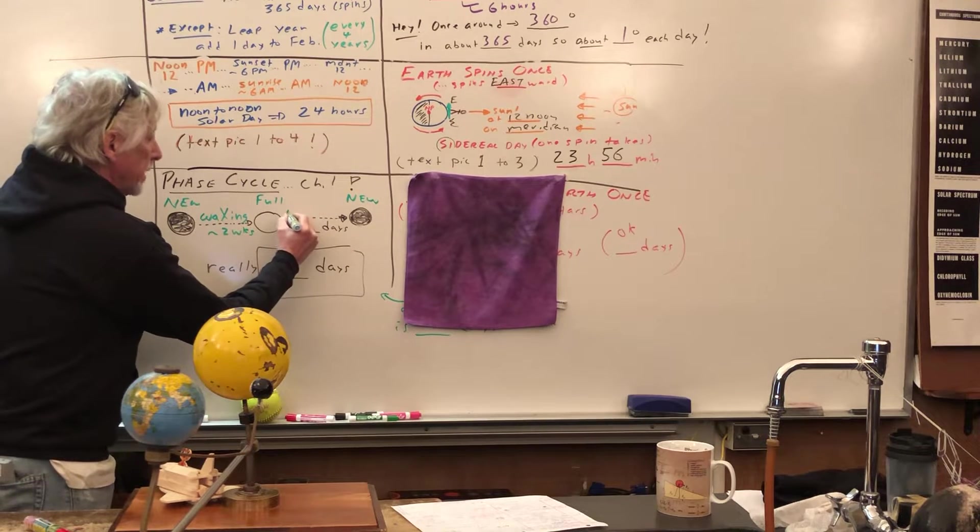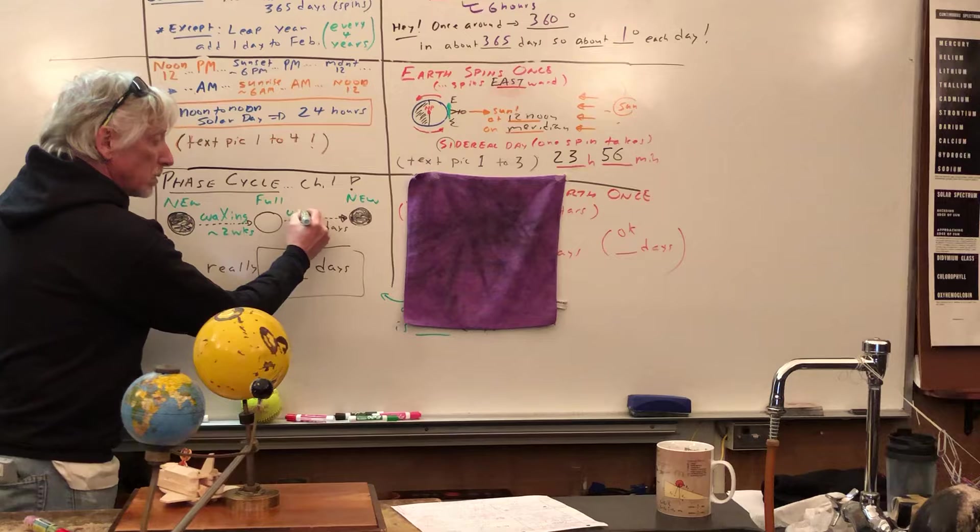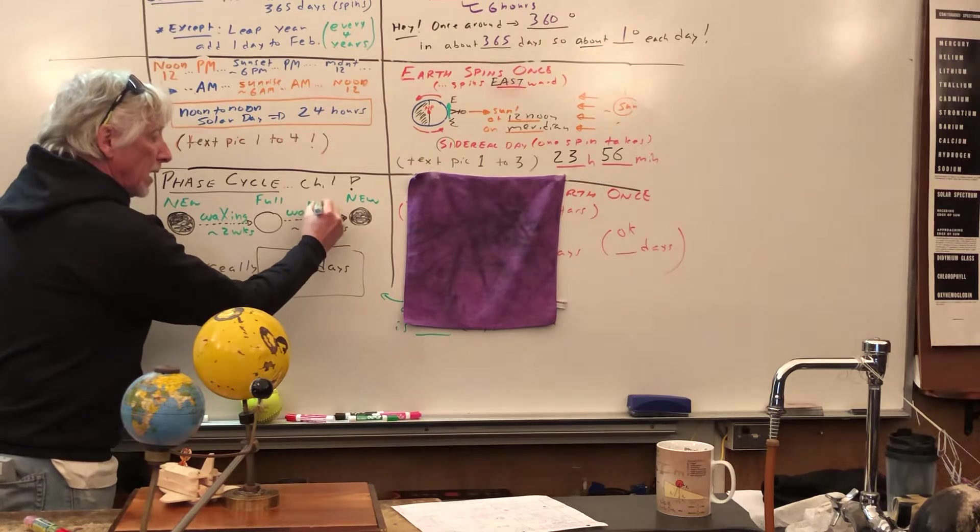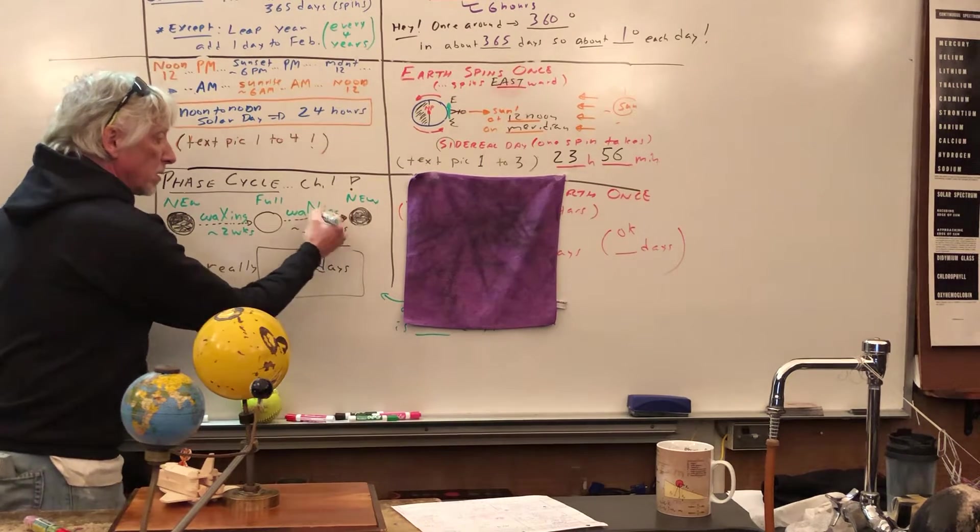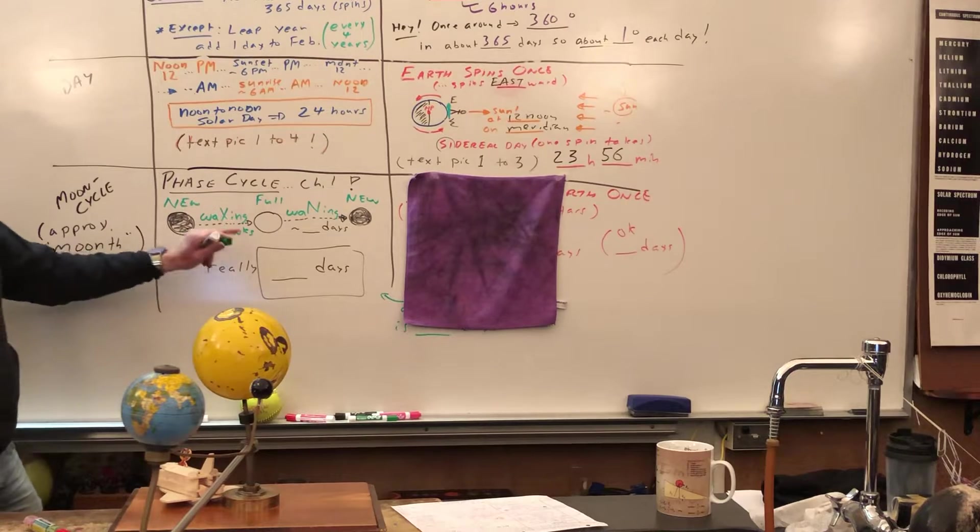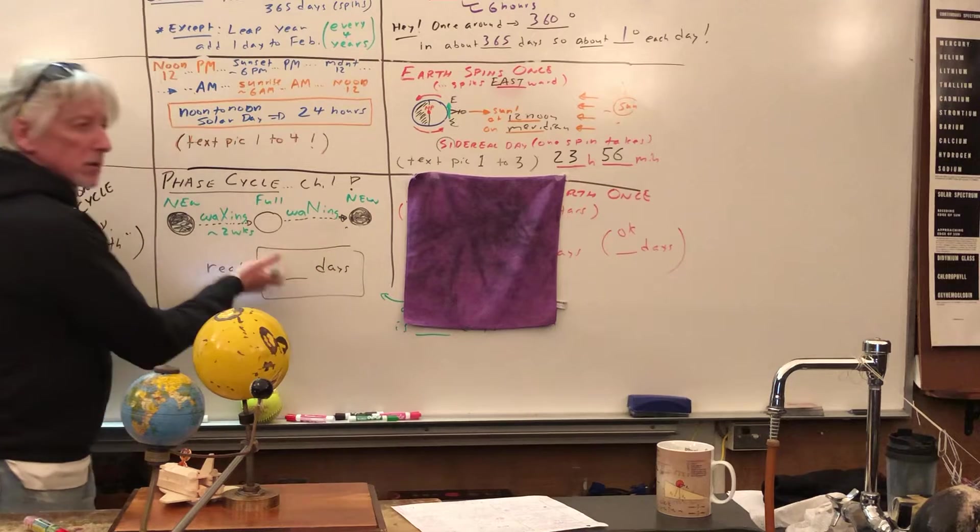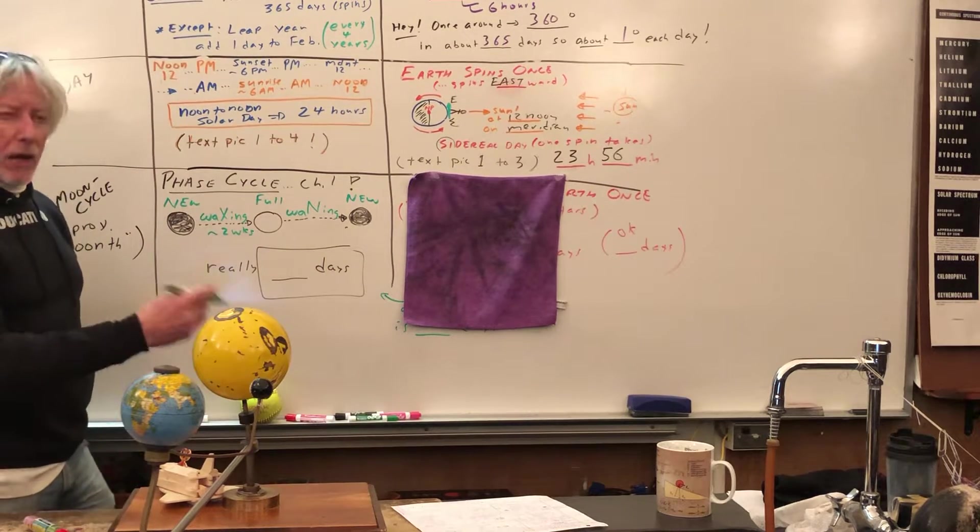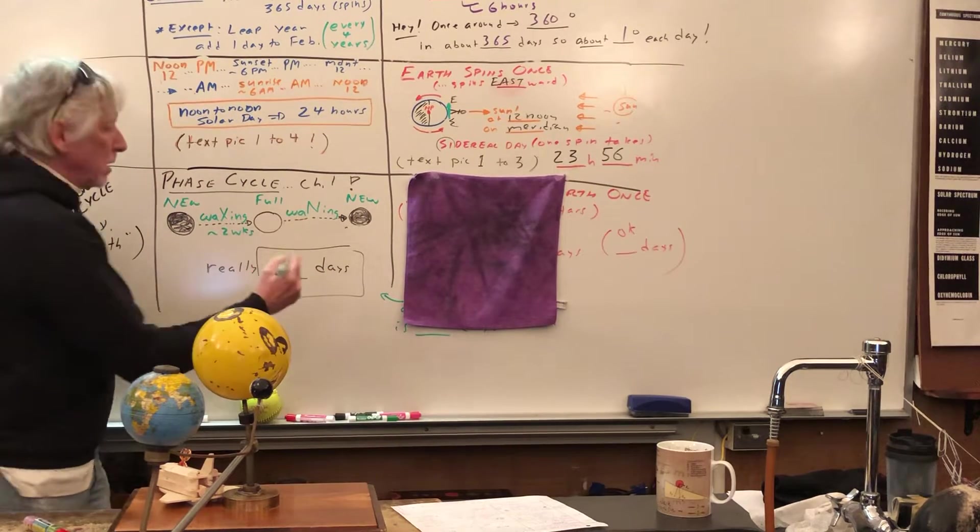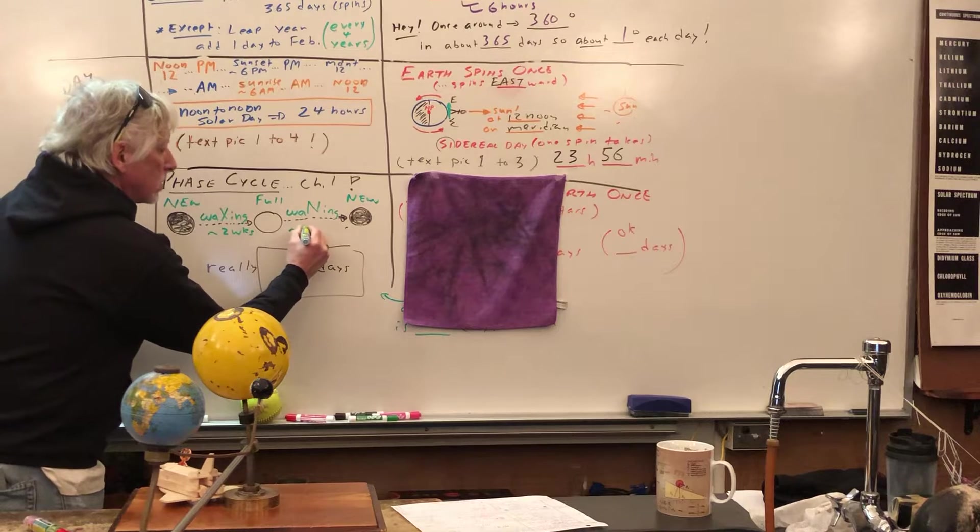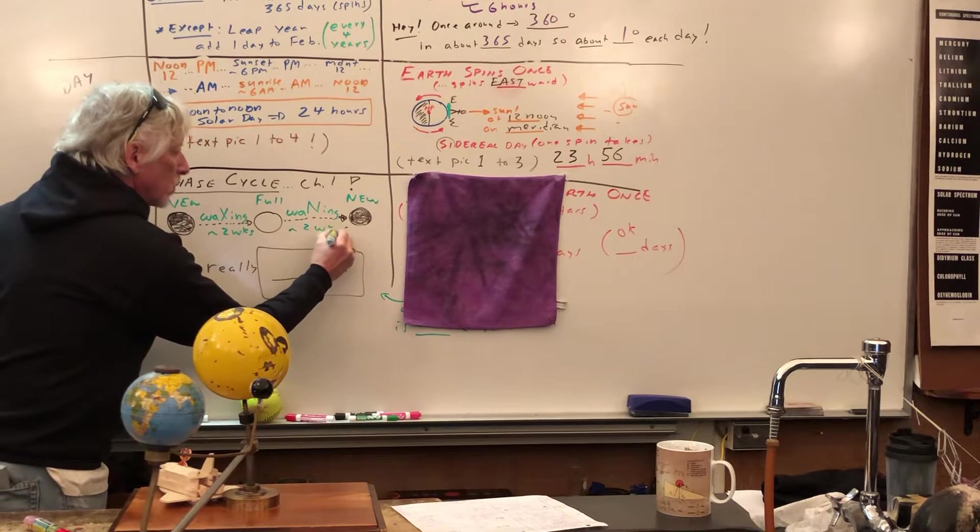And so we call that what? Waning. You don't have to draw it like that. And make sure you distinguish X and N. Waning for about 14 days. Every day changing slightly. So about two more weeks.